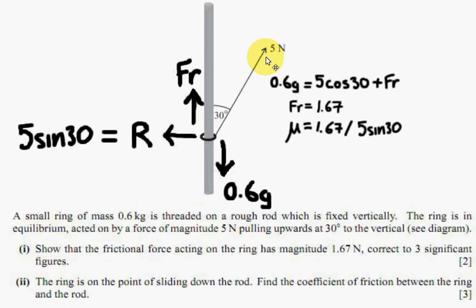So 5 cos 30 plus the friction are the two upwards forces, which should balance with the 0.6g Newtons going downwards. So that's what I've written here, and then you simply rearrange it and you get the frictional force of 1.67 Newtons.